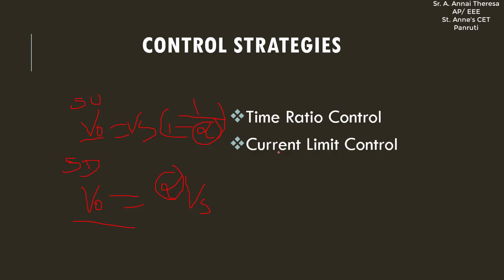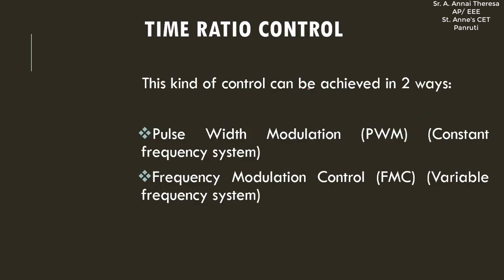There are two kinds of control strategies used in DC choppers: time ratio control and current limit control. In time ratio control, the value of duty ratio — that is alpha — is changed. Alpha is equal to the ratio between on time and total time. That's why it is called time ratio control; by controlling the time ratio, we can control the output voltage.